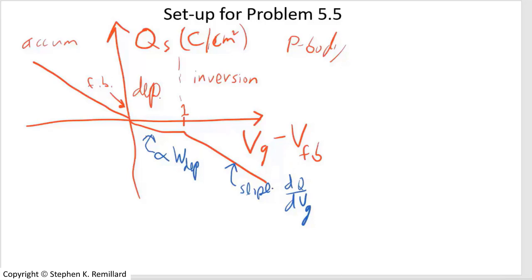Well, what up here, what do you have? You have the same thing. It doesn't matter if you're in accumulation or inversion. The slope is approximately minus the oxide capacitance. And I say approximately because there are those other contributing factors that I just got done talking about. So there's the setup. And it's a P body. So when V gate is less than V flatband, you're in accumulation. And when V gate is greater than V flatband, you're in depletion, eventually inversion.